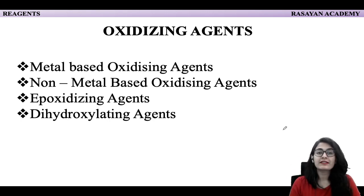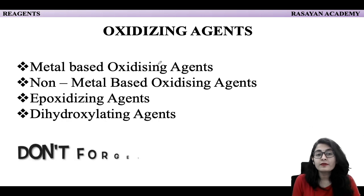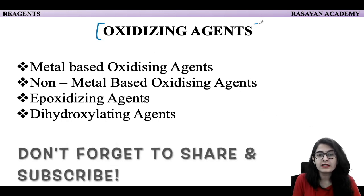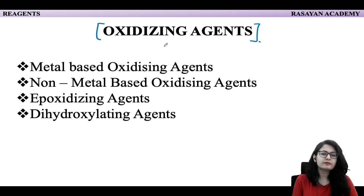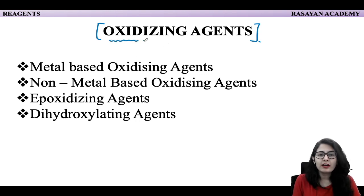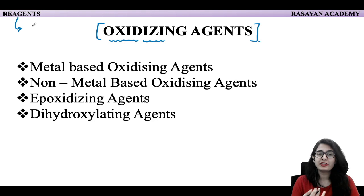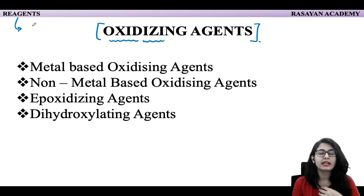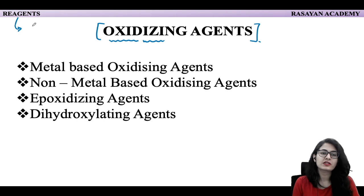Please write how you are liking these sessions. So first of all, I have tried to cover organic oxidizing agents. Organic reagents can be roughly classified into oxidizing agents, reducing agents, organometallic reagents, and protecting and deprotecting agents. So this is a rough classification for organic reagents.